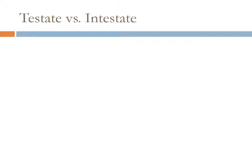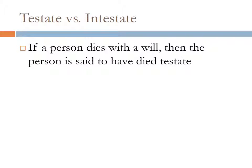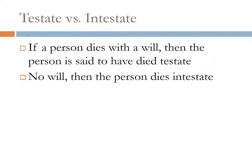Sometimes there is confusion between testate and intestate. If a person dies with a will, the person is said to have died testate. If there is no will, then the person dies intestate. So: testate means with a will, intestate means without a will.